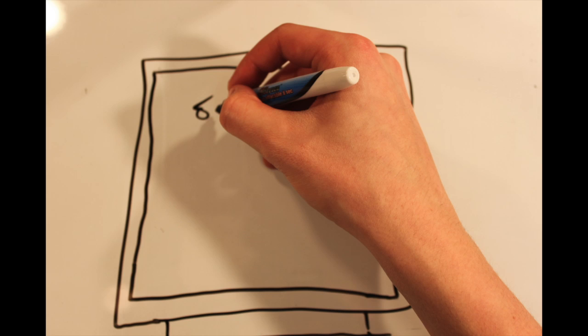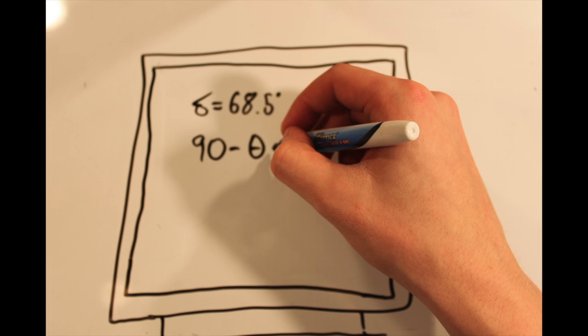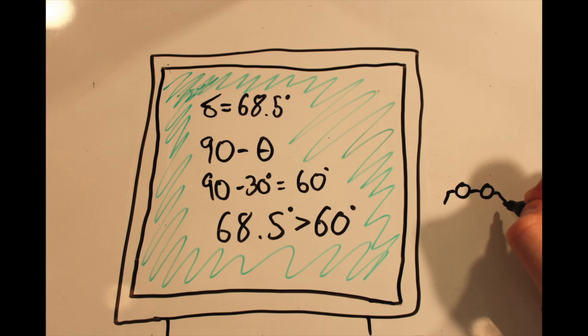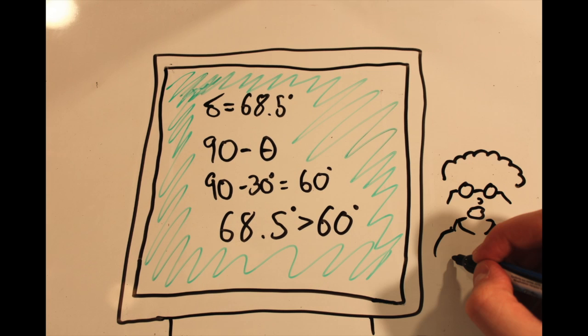With this knowledge, we are now able to check the calculation previously done. Since the system is in rotational equilibrium, N1 and F1 must pass through the center of gravity. So this means that the delta value is the same as the angle of lean. So delta equals 68.5 degrees, and 90 minus the theta of the snowboard tilt is 60 degrees. So this calculation checks out for being accurate.